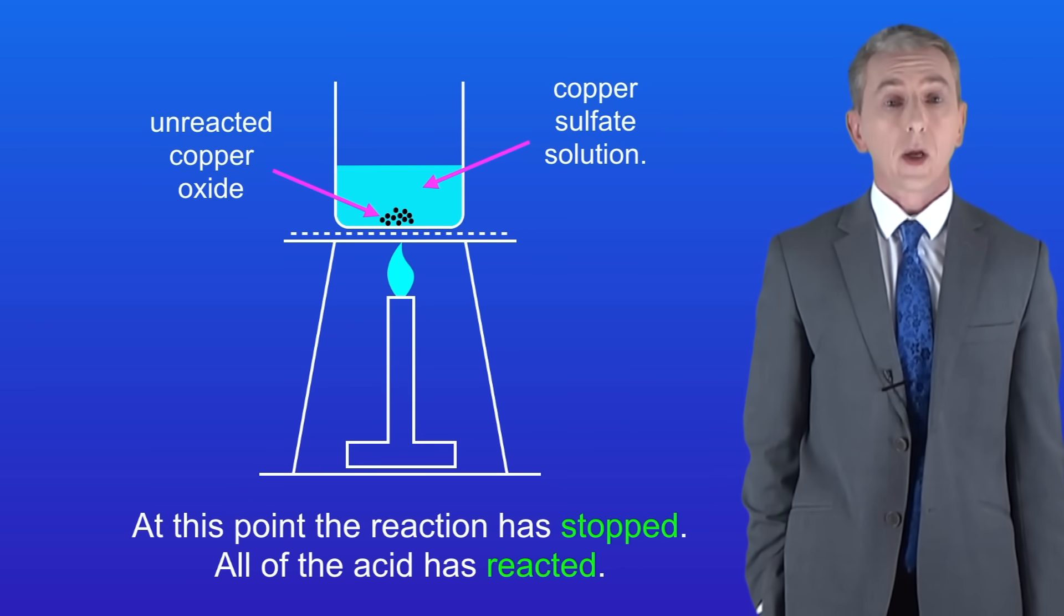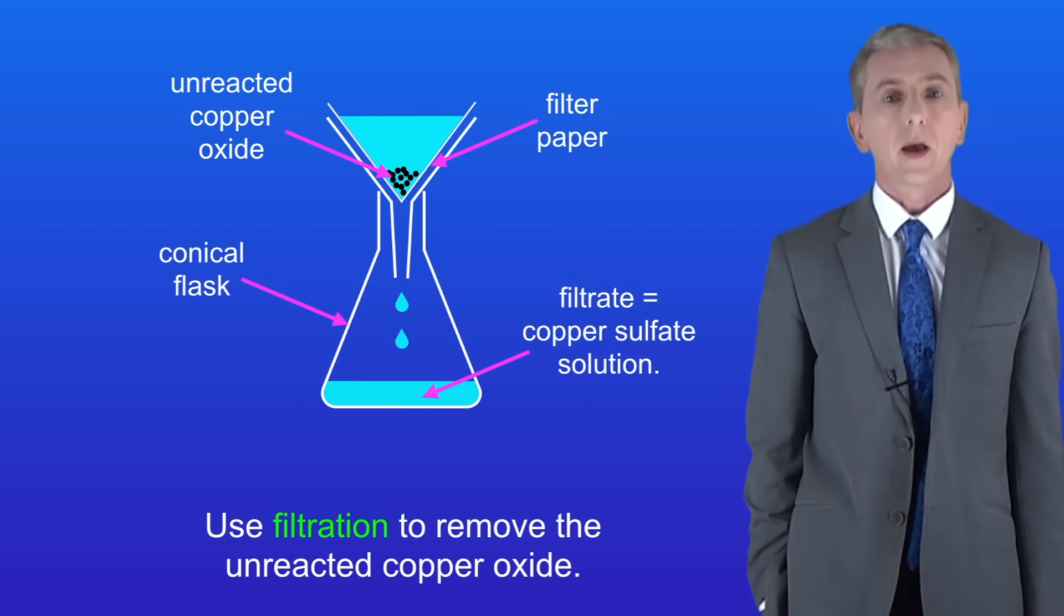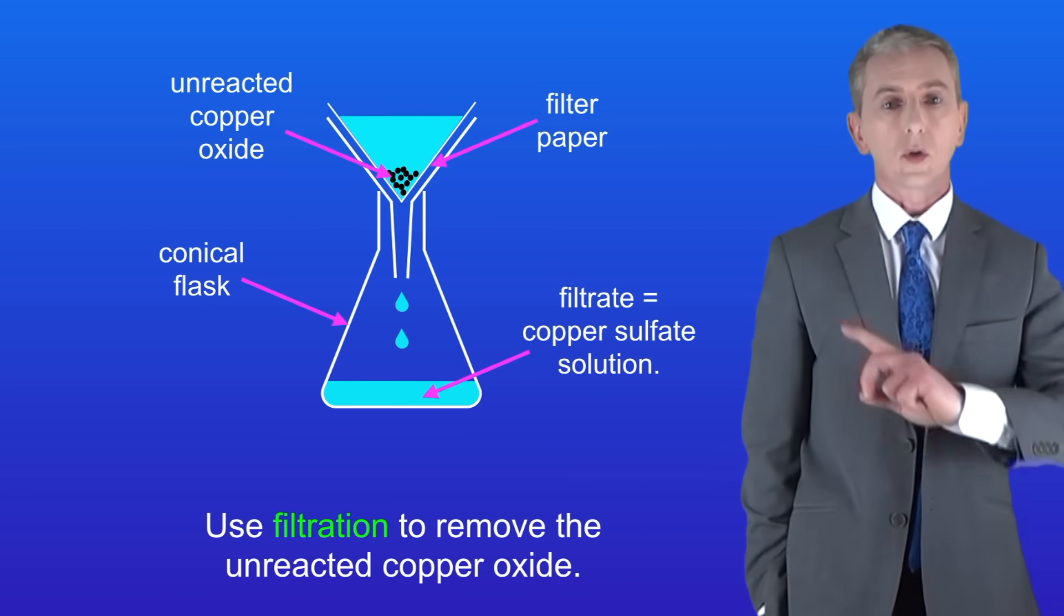In the next step we're going to make crystals of our copper sulphate. But first we need to remove the unreacted copper oxide. Because this is insoluble we can filter it away. To do this we use a filter funnel and filter paper which I'm showing you here.